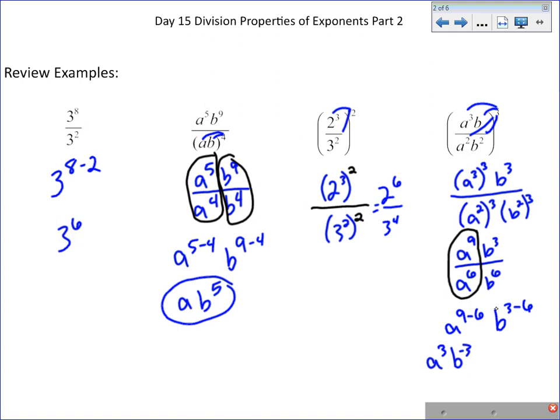a to the 3rd, b to the negative 3rd. And then we learned with negatives that we can move this down to make it positive, so we end up getting a to the 3rd over b to the 3rd. That's what we learned yesterday.